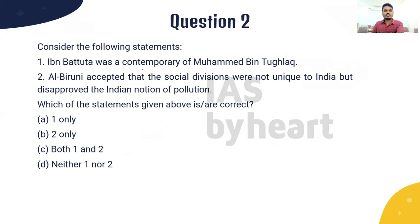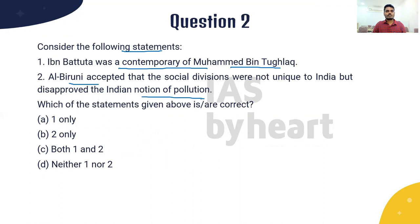After solving this question, we move to the next question. Consider the following statements. Ibn Battuta was a contemporary of Muhammad bin Tughlaq, and Al-Biruni accepted that social divisions are not unique to India but disapproved the Indian notion of pollution. There are three personalities given here: Ibn Battuta, Muhammad bin Tughlaq, and Al-Biruni. These three important personalities from medieval Indian history are key to this question.